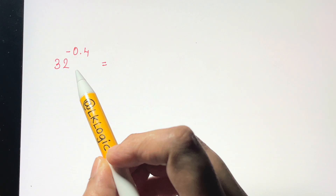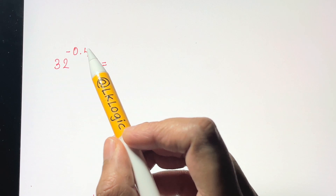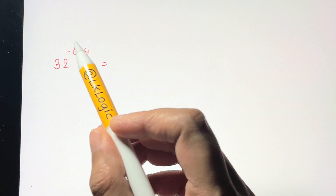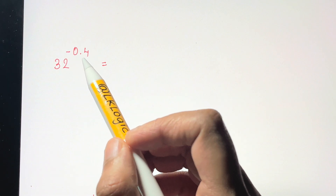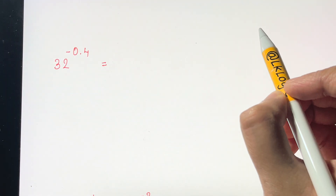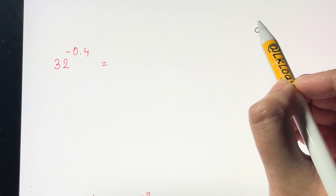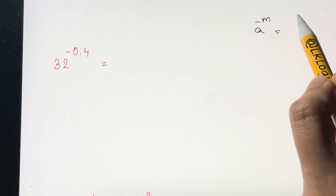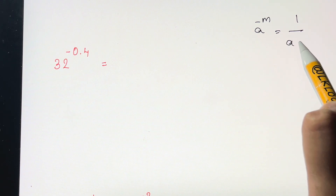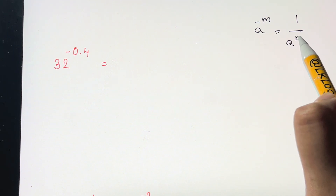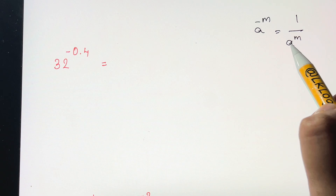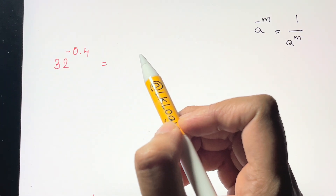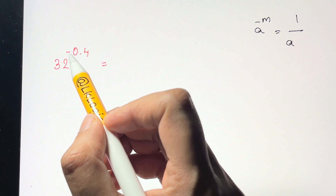Now let's move on to 32 to the power of negative 0.4. Here you have a negative exponent. For a negative exponent, if you have a to the power of negative m, you take the reciprocal of a and the power becomes positive, giving you 1 over a to the power of m.